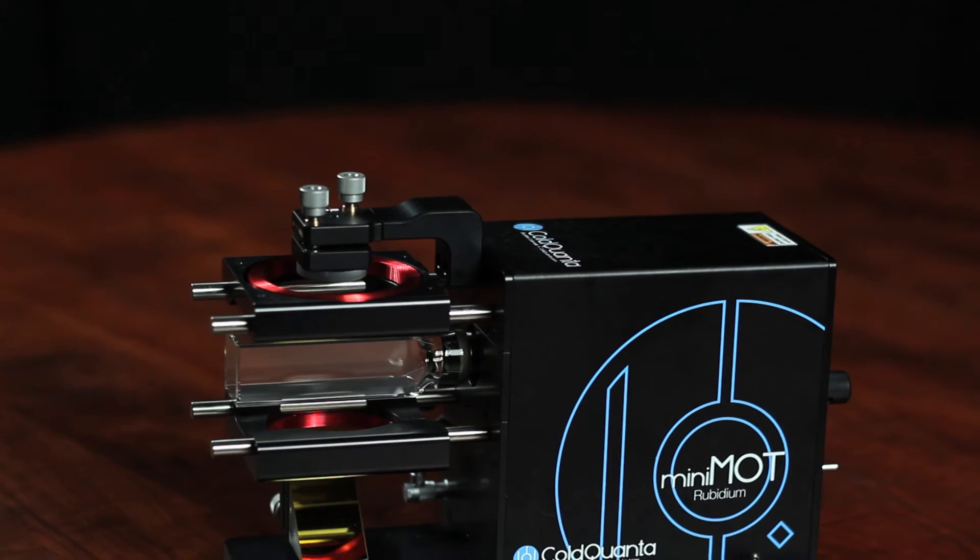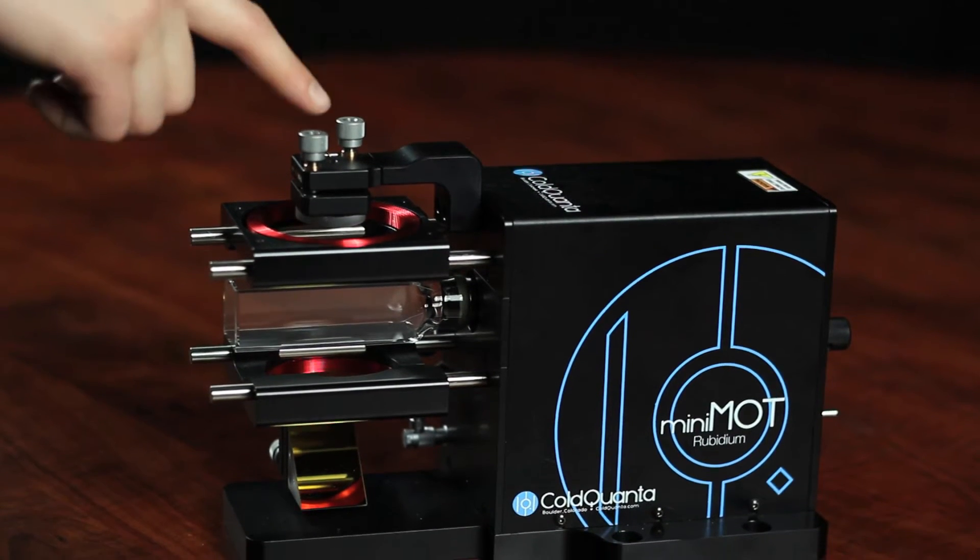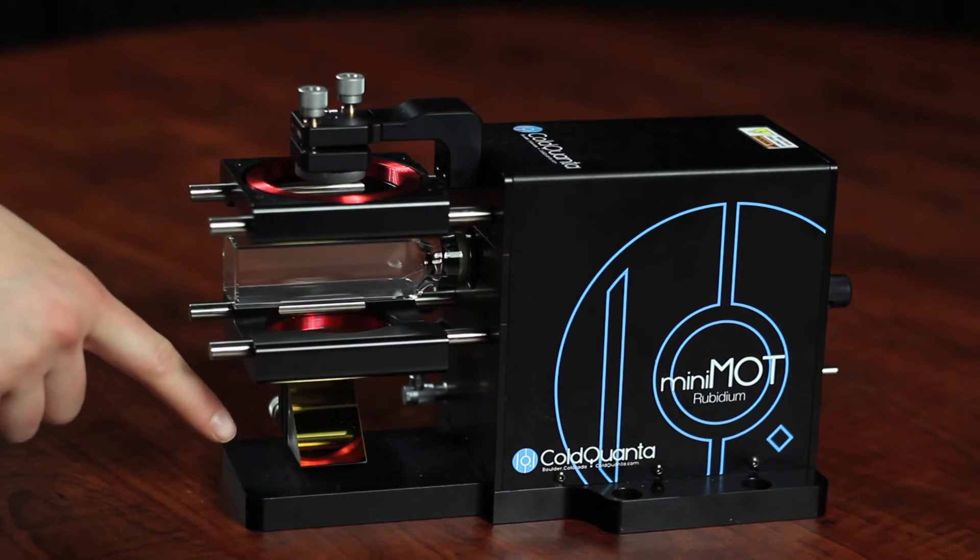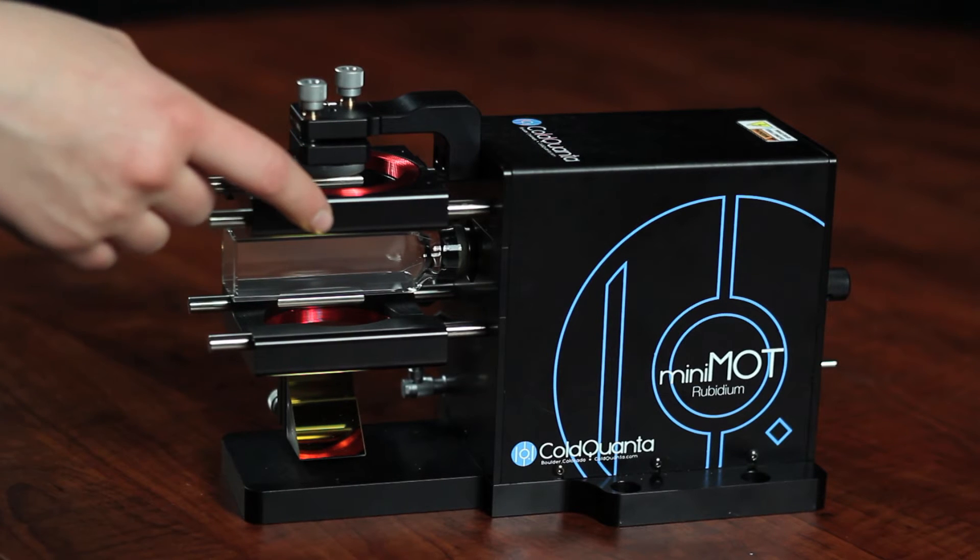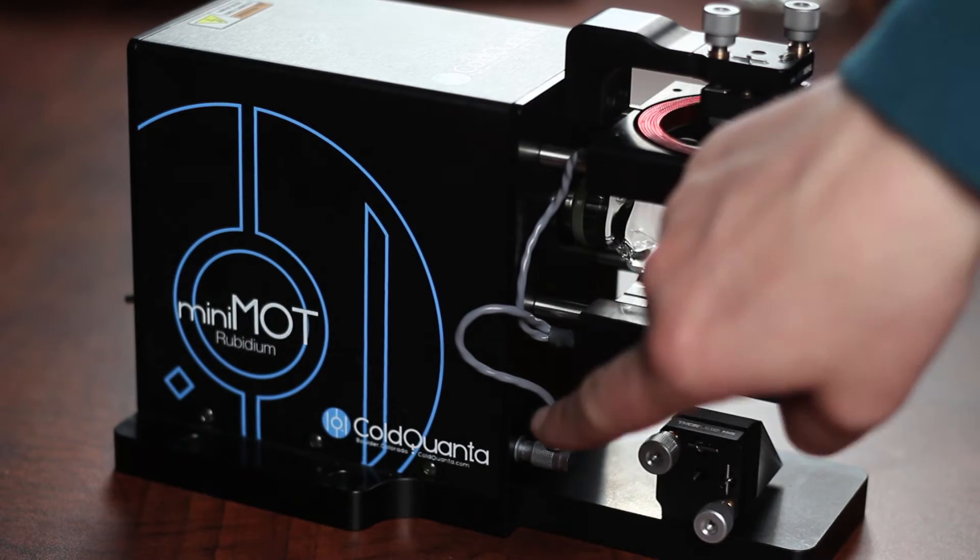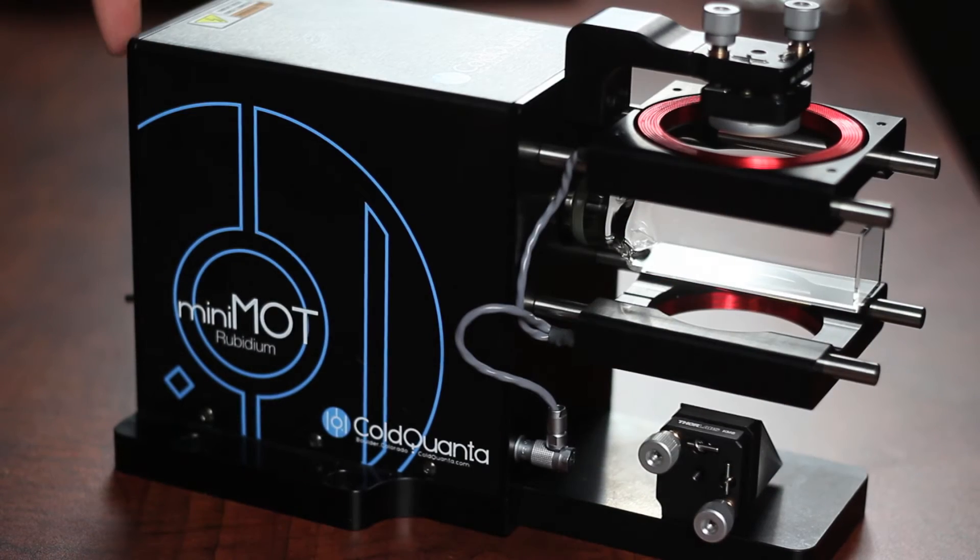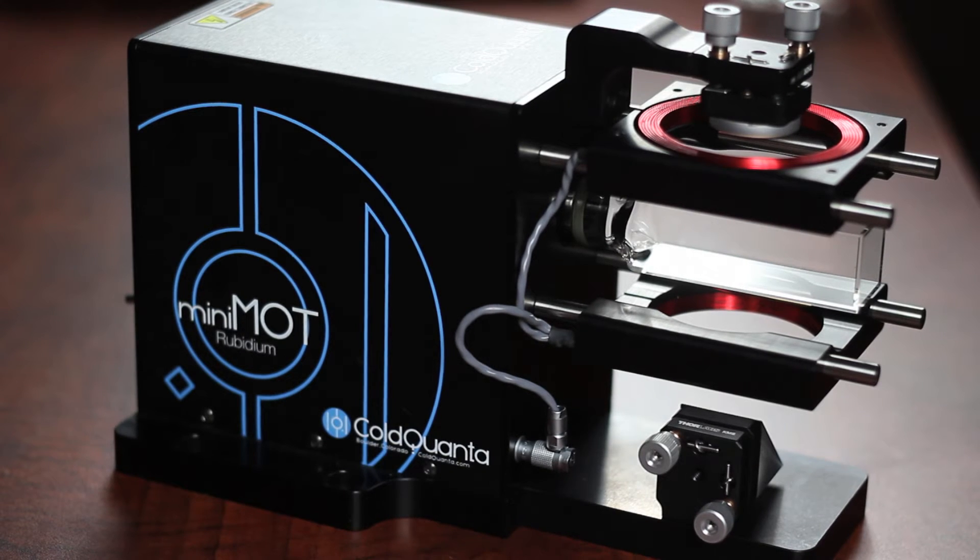Now for the Minimot. A vertical beam retro reflection mirror, a smaller vertical beam mirror, coil rails, coils, a plug for the coils, and the control panel which we will discuss in detail as we put the Minimot into action.